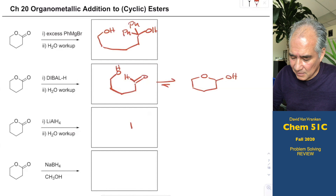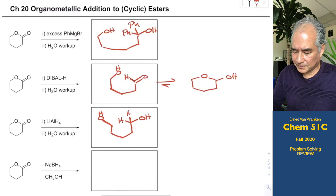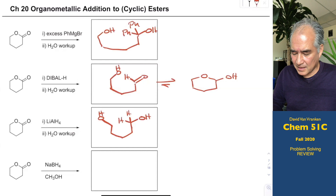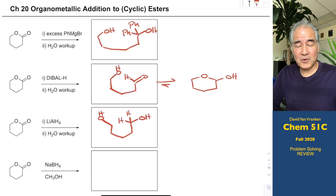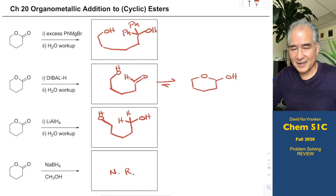Lithium aluminum hydride completely reduces carbonyl groups down. The leaving group here is attached — it leads to a completely symmetrical pentanediol where both ends are primary alcohols. Sodium borohydride is a trick question at the bottom: sodium borohydride is not reactive enough to react with esters. The real answer is no reaction — that's only for ketones and aldehydes. It doesn't matter whether it's a cyclic or acyclic ester; if you want to reduce ester groups, you have to use lithium aluminum hydride.